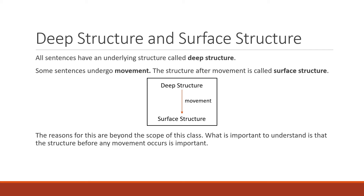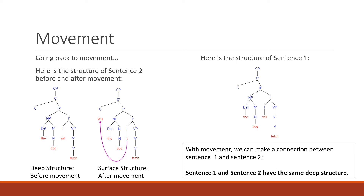Doing it this way creates what we call a deep structure and a surface structure. All sentences have an underlying structure called the deep structure, and some sentences undergo movement — not all of them do — and the structure after movement is called the surface structure. So: deep structure, then movement, then surface structure; or deep structure equals surface structure when no movement occurs. Here's an example: the deep structure of sentence two is 'the dog will fetch,' and the surface structure becomes 'will the dog fetch' — which is what you actually say.